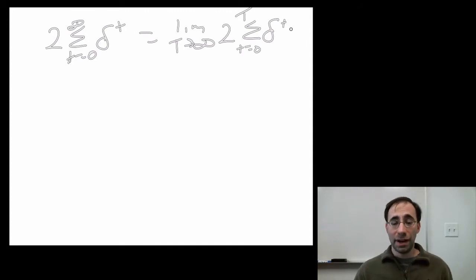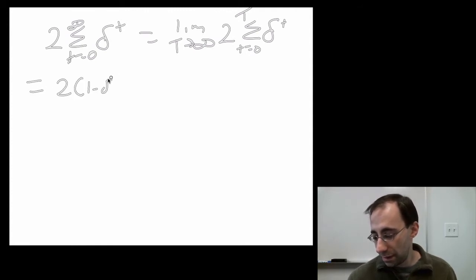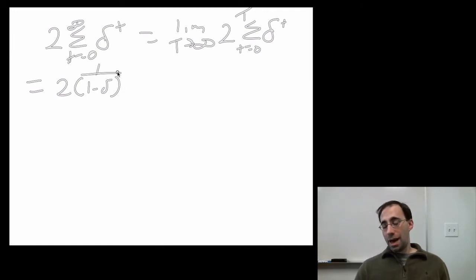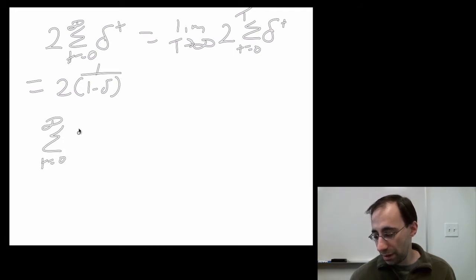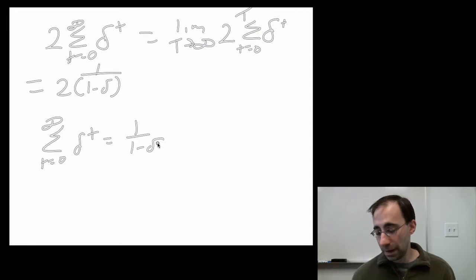In this case, you can do it with a kind of nice trick. Let's start by assuming that the answer is 1 over 1 minus delta. How do we show that? Well, we're trying to show this particular relationship. If you read the left-hand side, we get 1 plus delta plus delta squared plus forever.